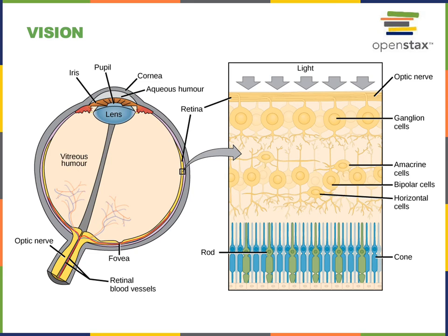Cones are the photoreceptors that are activated by specific colors of light. There are three major types of cone photoreceptors: cones that respond to red light, cones that respond to green light, and cones that respond to blue light. The combination of those three cones enables us to perceive the wide range of color in our environment.